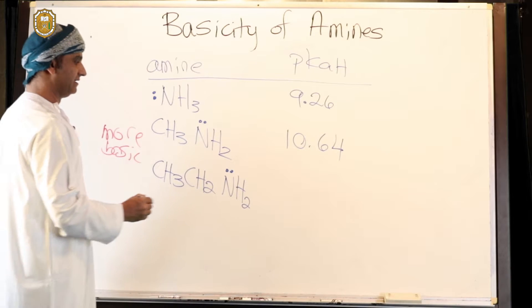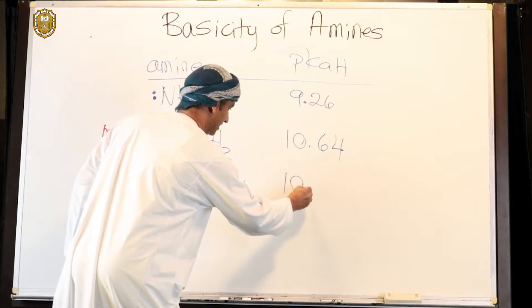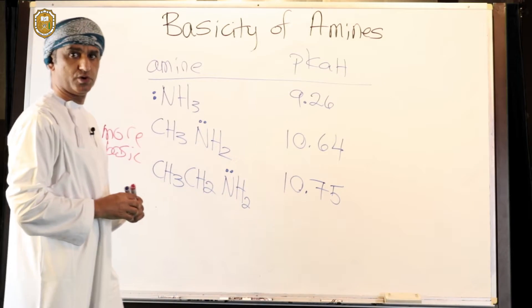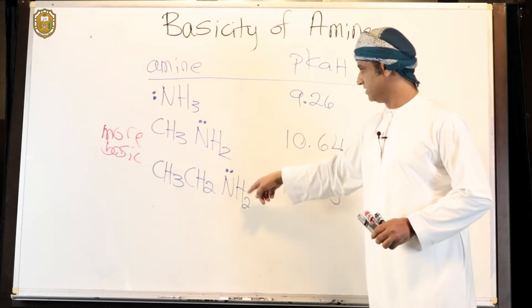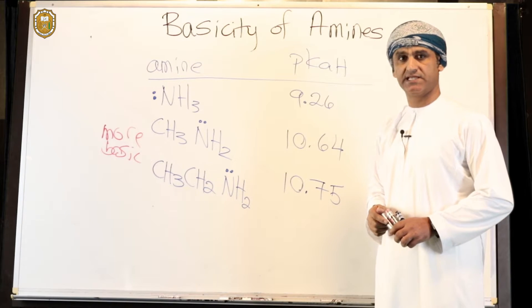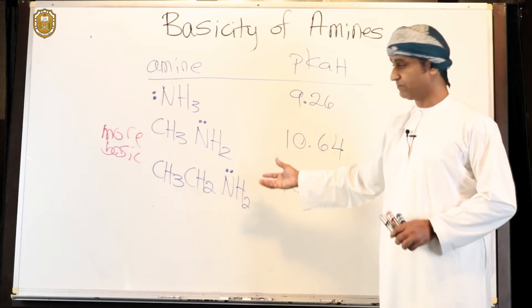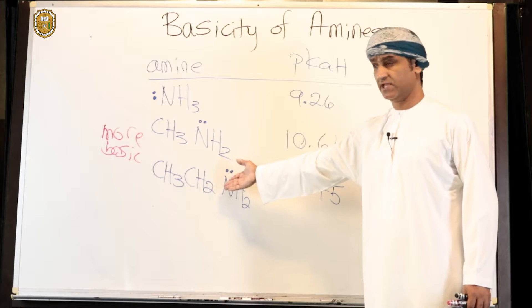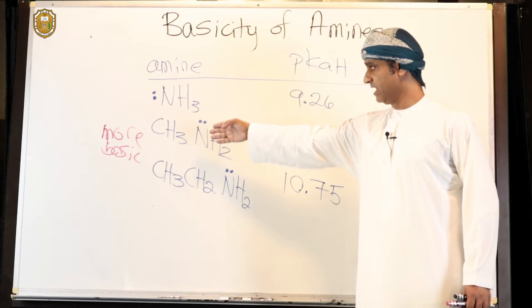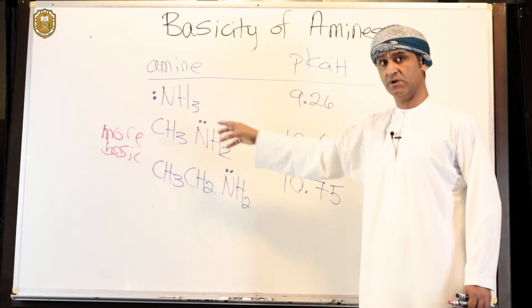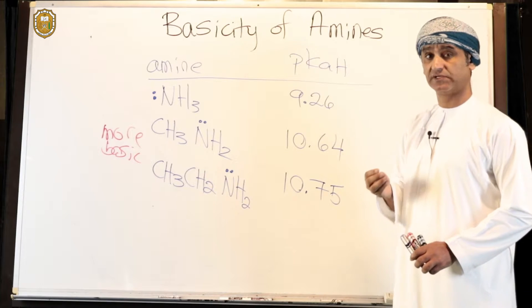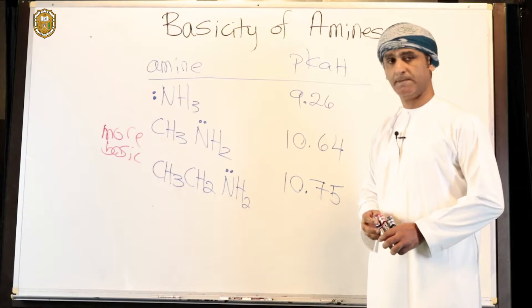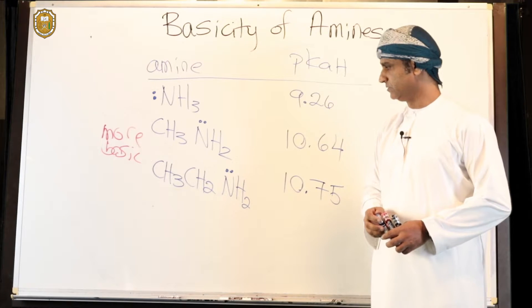If we take ethyl amine, the pKa is actually 10.75, a little bit more, which suggests that ethyl amine is more basic than methyl amine itself. The reason is the presence of an electron-donating group by inductive effect - an ethyl group here versus methyl group there. The presence of that methyl group, which is an electron-donating group by inductive effect, is really the reason behind the higher basicity of methyl amine with respect to ammonia.